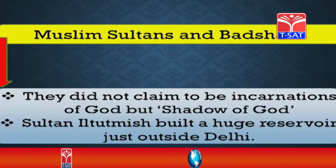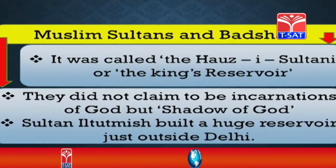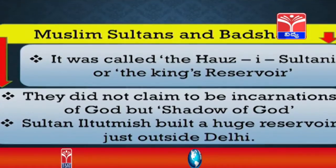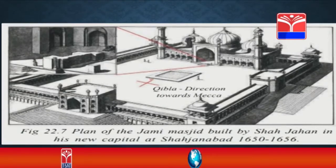Muslim sultans and badshahs — not only Hindu rulers, India was ruled by a number of Muslim rulers — during their reign started building beautiful mosques, palaces, and other important constructions. They did not claim to be incarnations of god but the shadow of god. Sultan Iltutmish built a huge reservoir just outside Delhi, called the Haas-e-Sultani, or the king's reservoir. Some kings also dedicated reservoirs, wells, and mosques for the people's use.